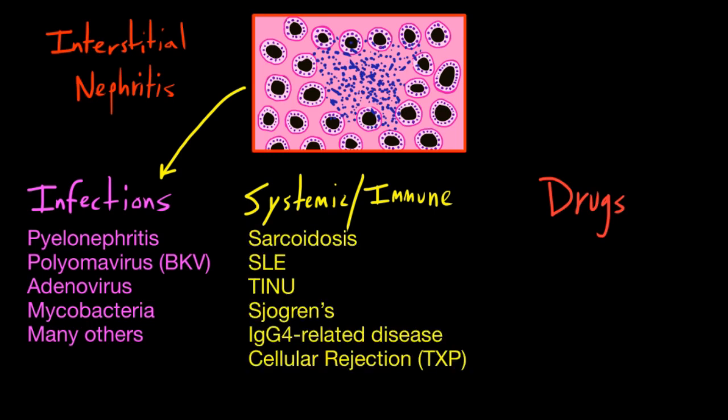The next category involves systemic and immune-related diseases. Sarcoidosis is a relatively common cause of interstitial nephritis among patients with sarcoid. Patients with lupus can have an interstitial nephritis — there's typically something going on at the glomerular level too, but interstitial nephritis can be present. TINU is a syndrome of tubular interstitial nephritis with uveitis, another autoimmune disease. It can be seen with Sjogren's syndrome, and there's also IgG4-related disease, a systemic illness that can cause interstitial nephritis.